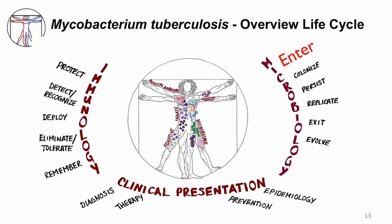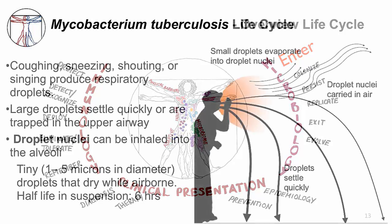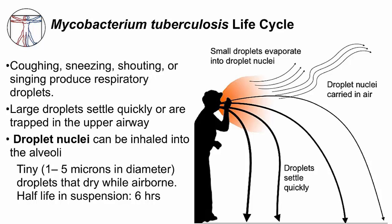The first step is ENTER. MTB is transmitted through respiratory droplets that are produced by a person coughing or sneezing, even shouting or singing. Those large droplets that you can sometimes feel after someone sneezes actually quickly settle to the ground, whereas the small droplets evaporate into droplet nuclei and can be airborne with a half-life of about six hours. It's these invisible droplet nuclei that can transmit MTB. Recall that mycobacteria evolved at the air-water interface where they were often aerosolized, and they evolved the ability to resist drying so they can remain in these dried-out small droplets.